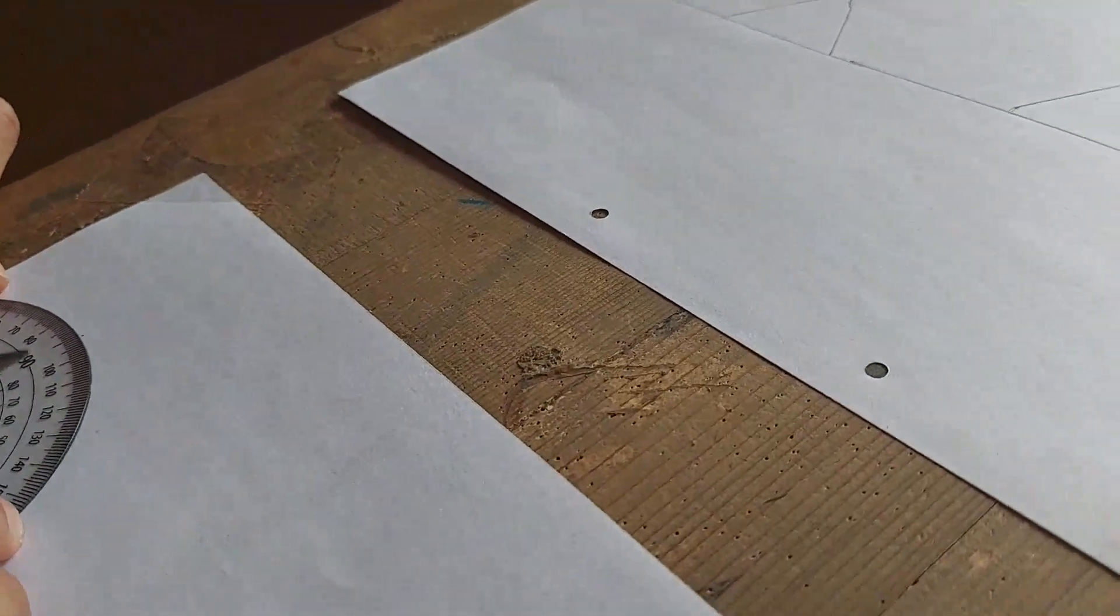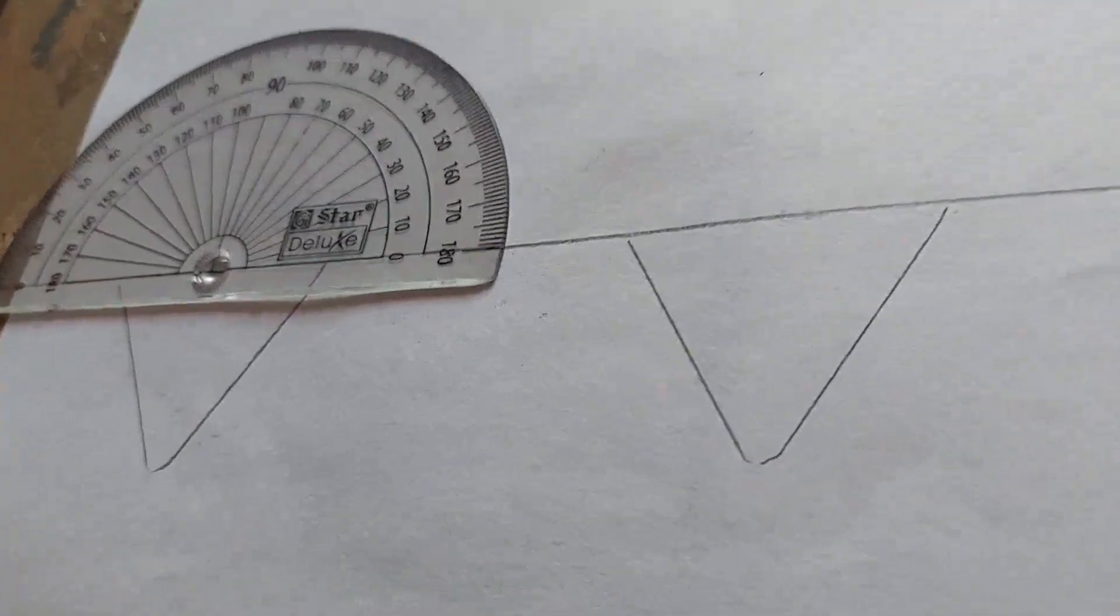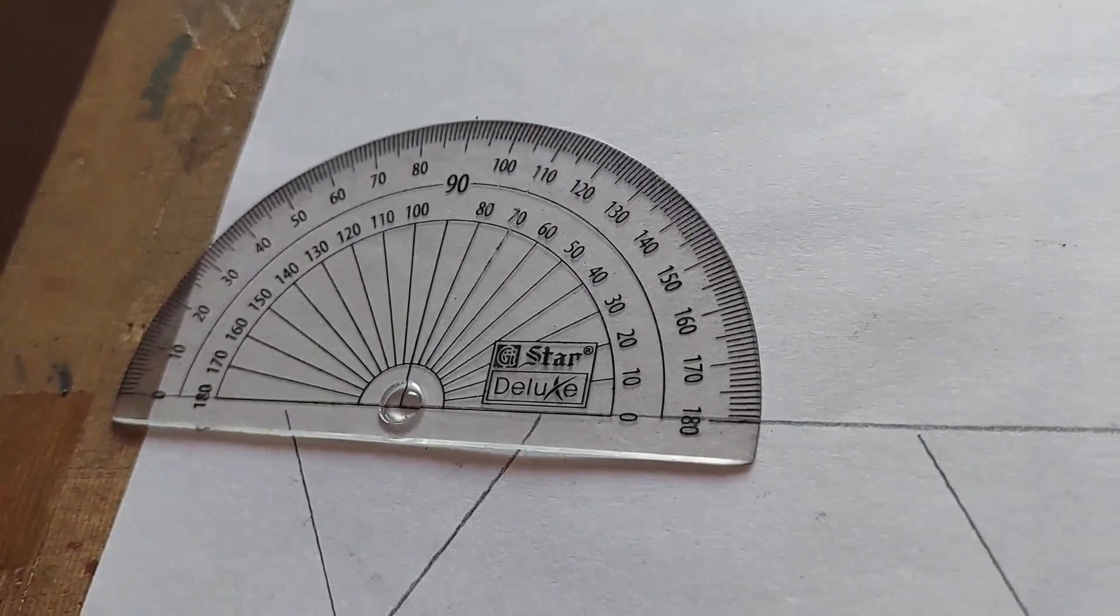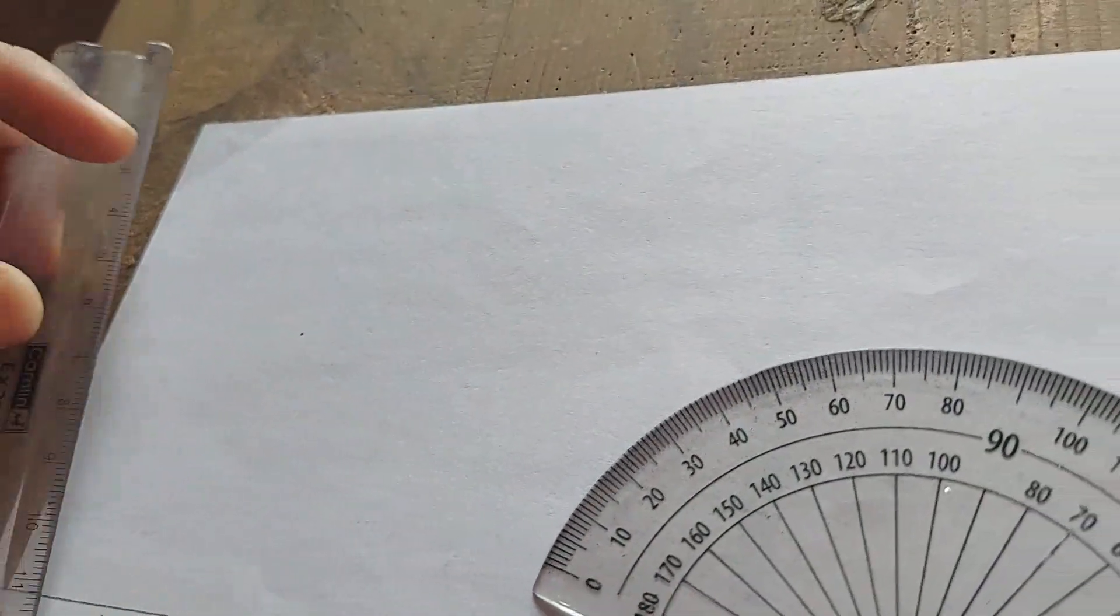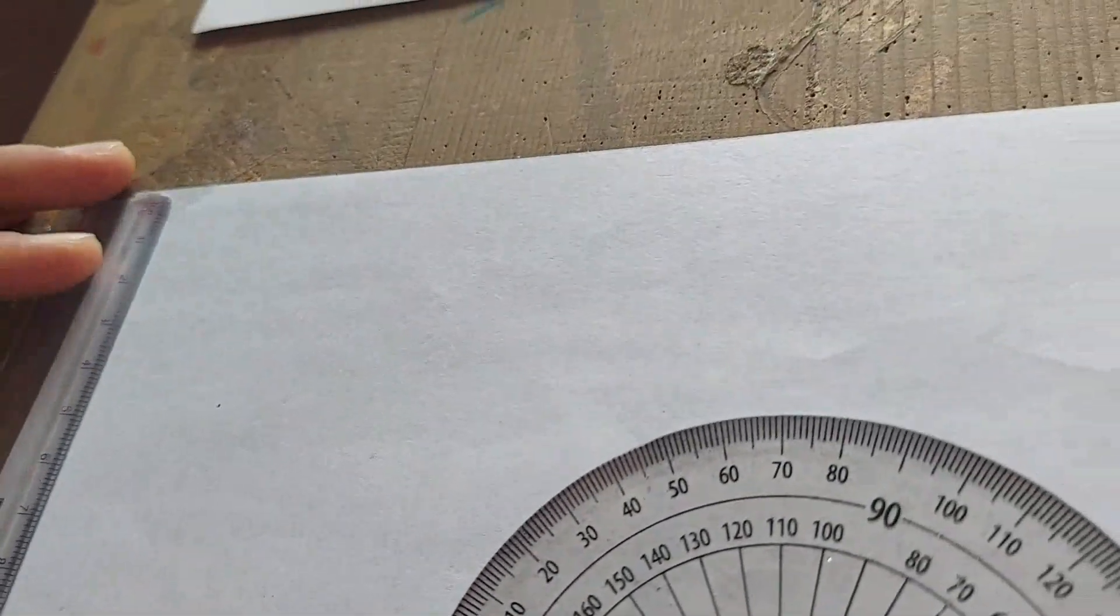Now somewhere in the middle you keep the protractor and mark the point of 90 degrees as he has done. Then he will join it with the point here. First you draw the point here.